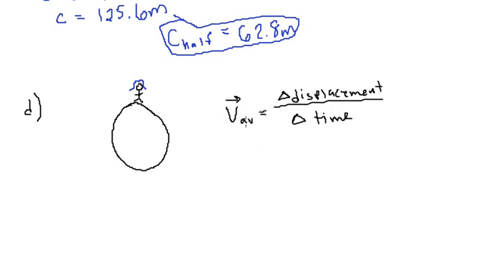So average velocity is the change in displacement. Okay, so the girl is going to cover half the lap. Okay, so if you remember from part C, we said that half the lap is this distance right here, correct? This was the distance of half the lap. And that is where a lot of students tend to get confused and stuck.